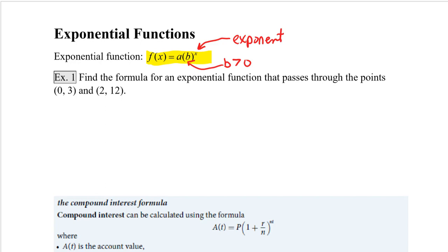We can find the formula for an exponential function if we have two points on our curve. It's easiest when one of those points is the y-intercept. So let's look at example 1. Find the formula for an exponential function that passes through the points (0, 3) and (2, 12). So basically we have two points (x, y) and we're going to substitute them into our exponential function equation.